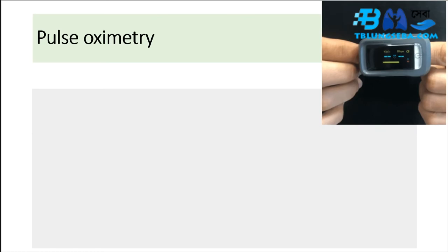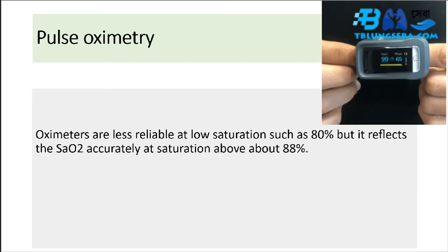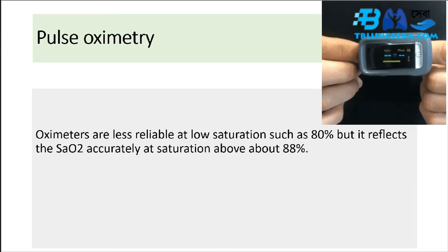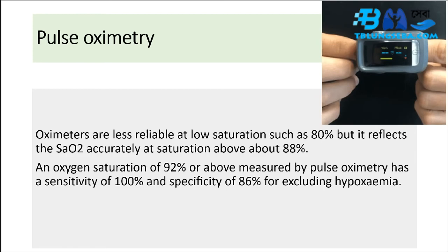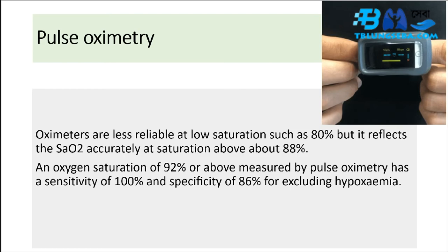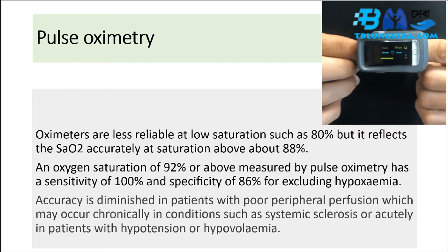Pulse oximetry: oximeters are less reliable at low saturations such as 80%, but reflect SpO2 accurately at saturations above about 88%. An oxygen saturation of 92% or above measured by pulse oximetry has a sensitivity of 100% and specificity of 86% for excluding hypoxemia. Accuracy is diminished in patients with poor peripheral perfusion, occurring chronically in conditions like systemic sclerosis or acutely in hypertension or hypovolemia.